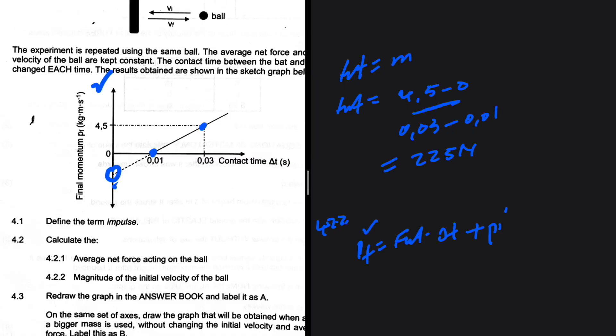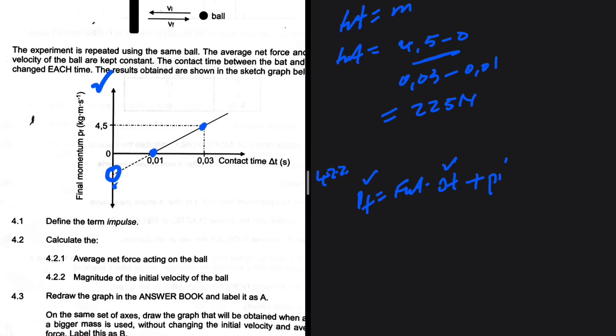All right, so now we need to pick a final momentum and its corresponding value. We can pick 0 or 4.5. We would get the same answer. If we pick 0, we'd have the final momentum being equals to 0. F_net being 225, as it is average, it is constant. Delta t is 0.01 plus p_initial. So minus 2.25 will be close to p_initial.